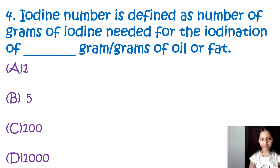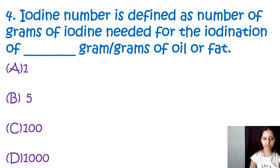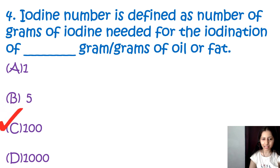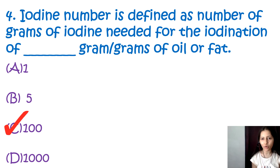Question number 4: Iodine number is defined as the number of grams of iodine needed for the iodination of how many grams of oils and fat? Options are 1, 100, 500, and 1000. The correct option is C, that is 100. The iodine number is defined as the number of grams of iodine needed for the iodination of 100 grams of oil or fat.